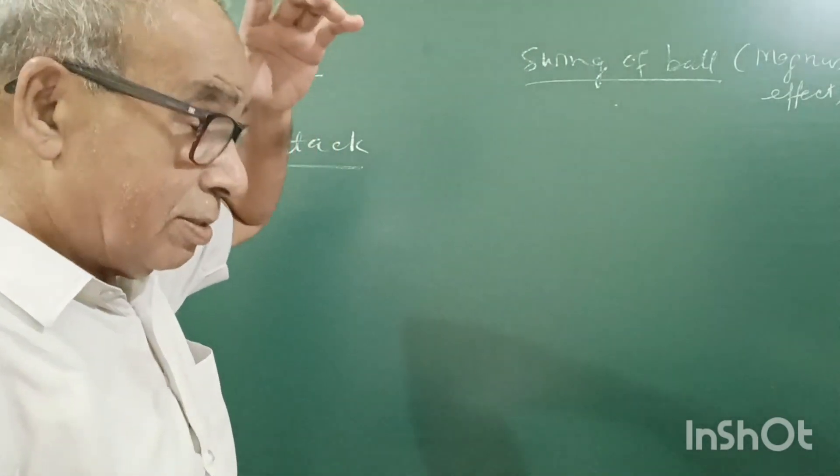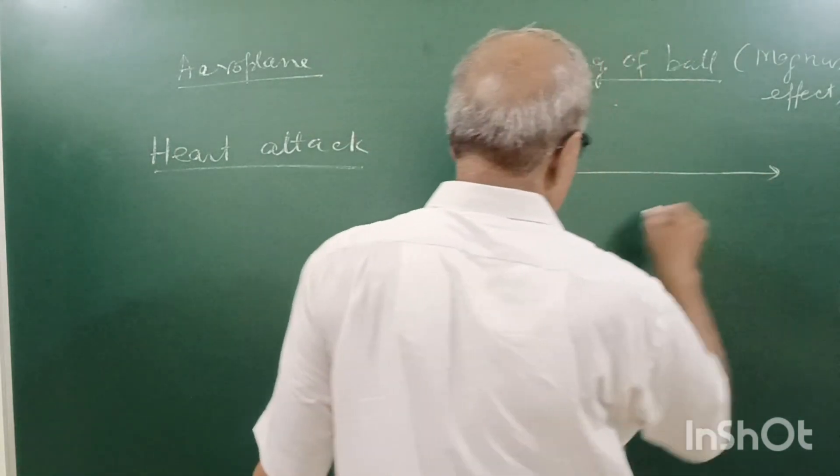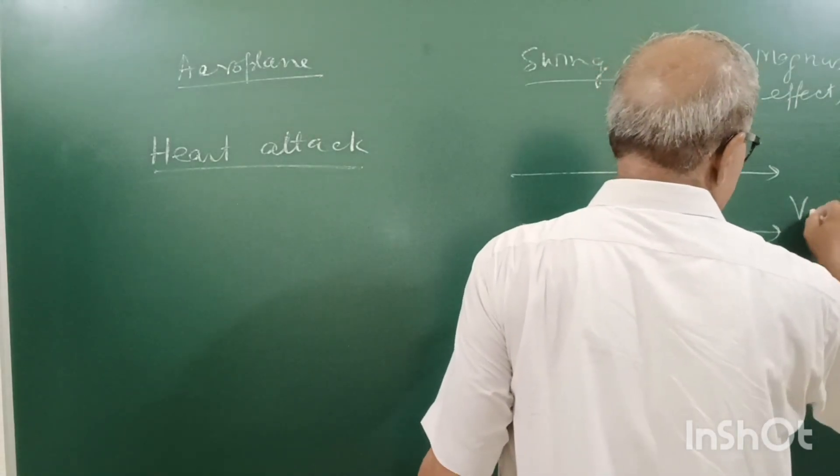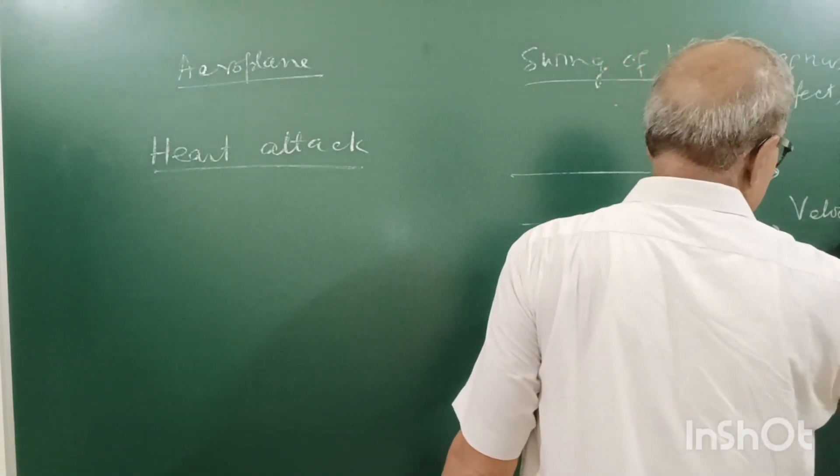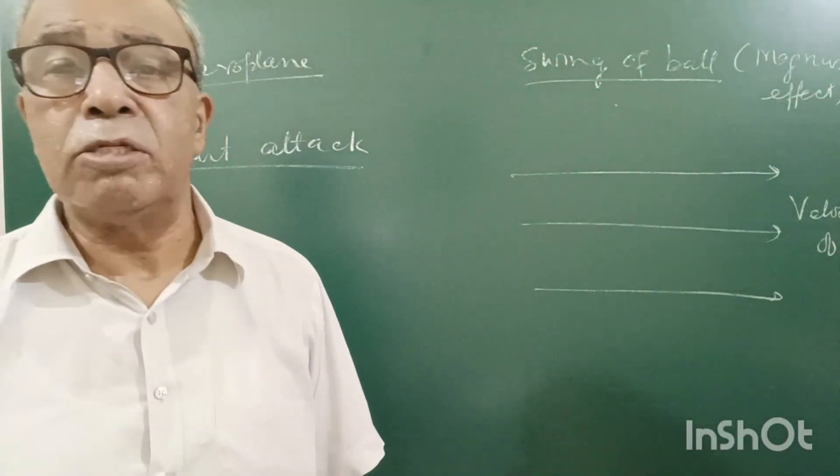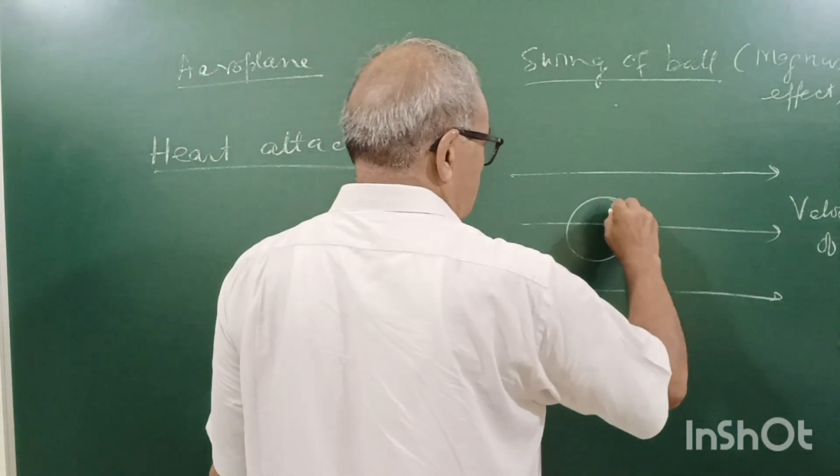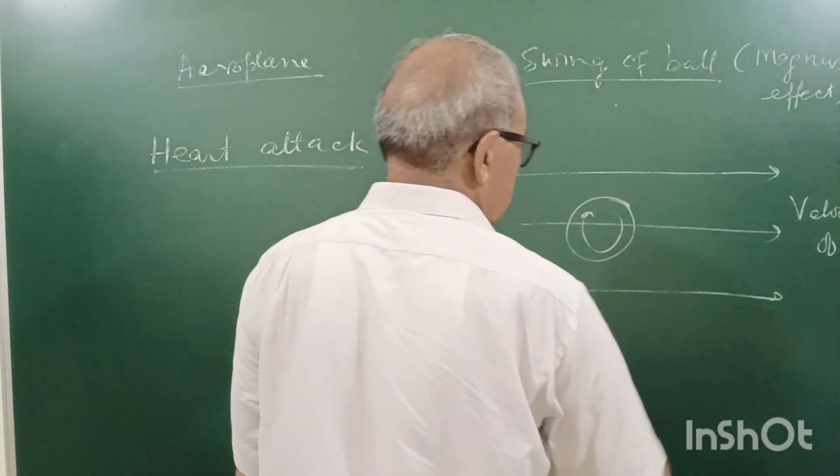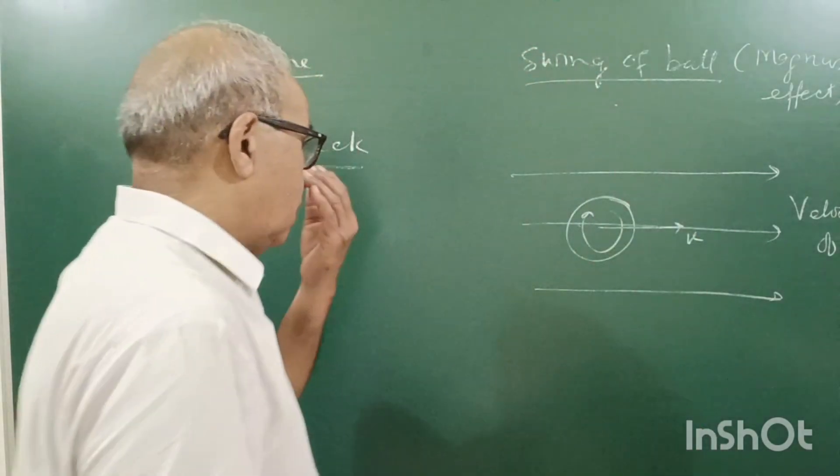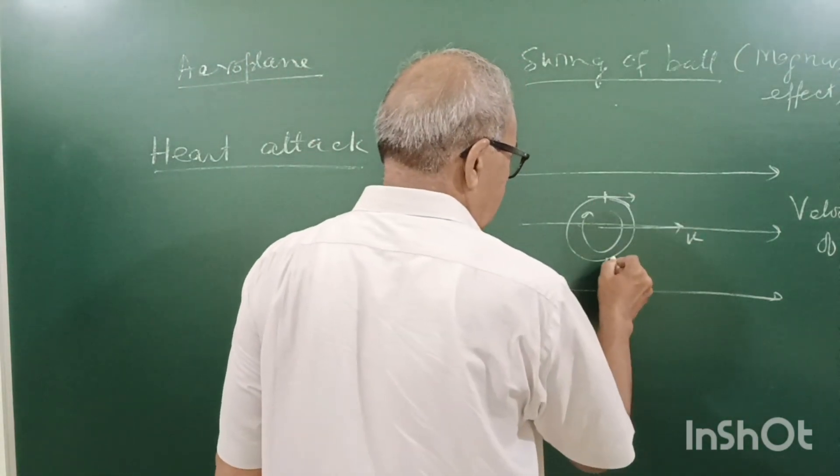What is this? Actually, when air is flowing this way, this is the velocity of air. And the player throws the ball with spin also. Besides linear velocity, there is also rotational motion. So, linear velocity here will be this way, and here will be this way. It is point A, it is point B.